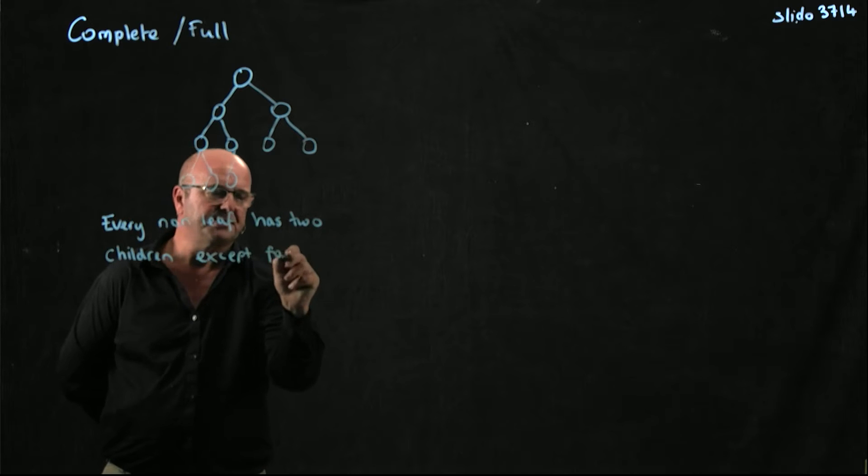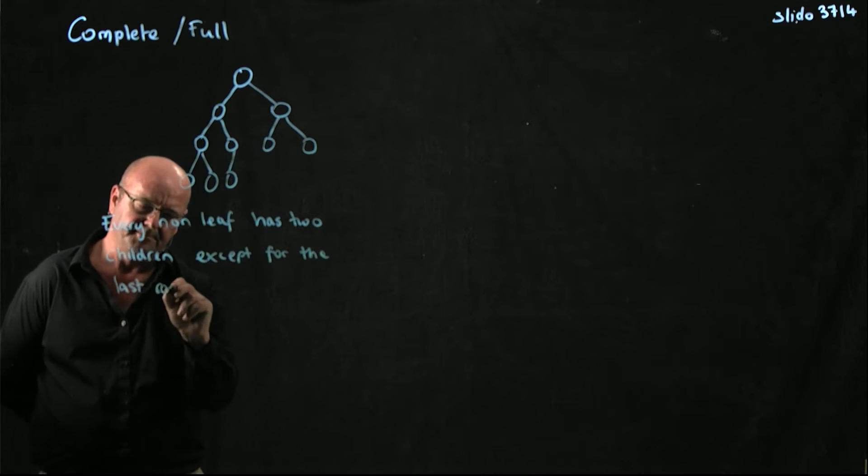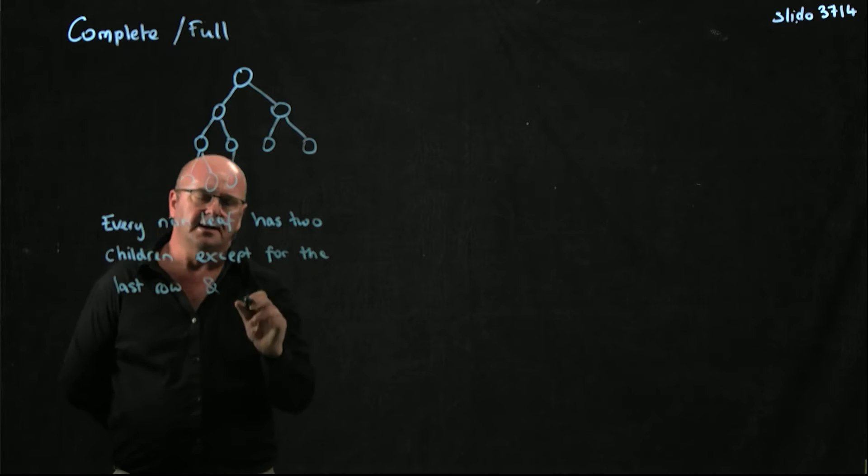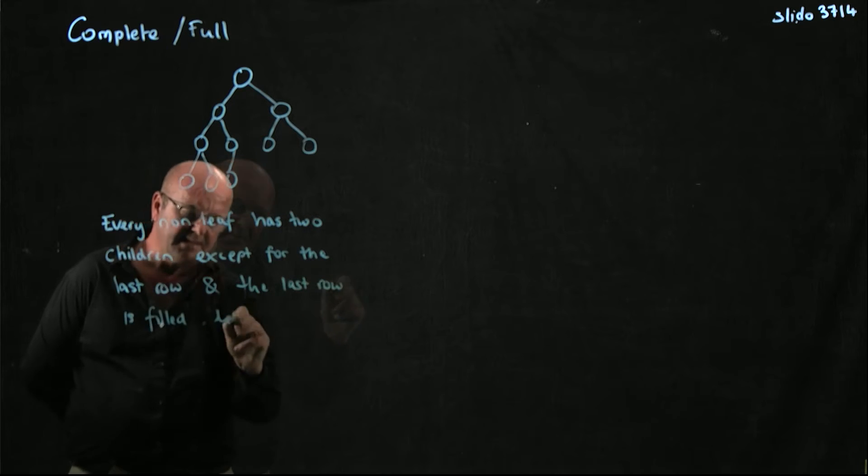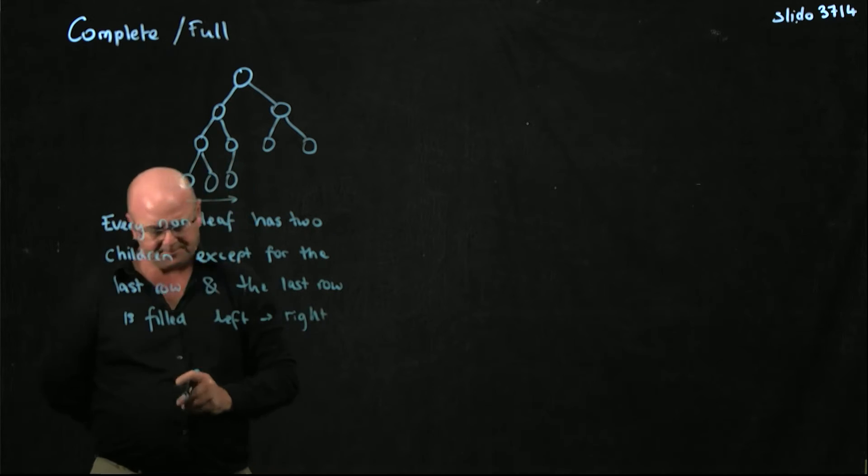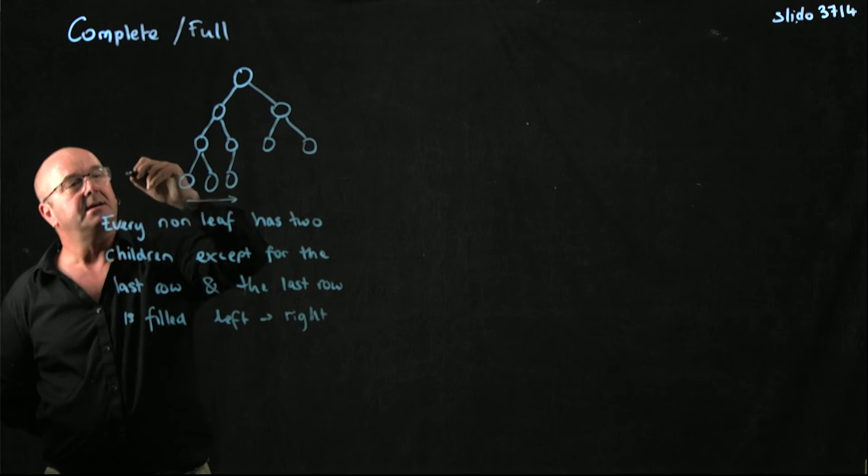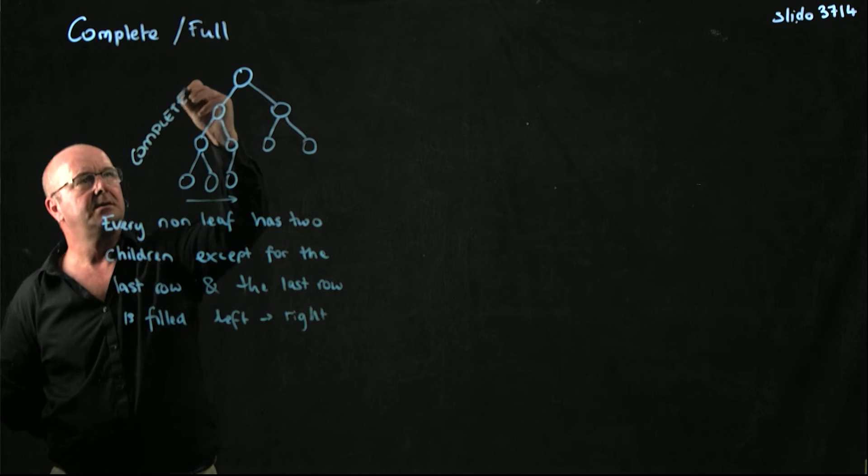except for the last row, and the last row is filled left to right, like this, then we say that this is a complete tree.